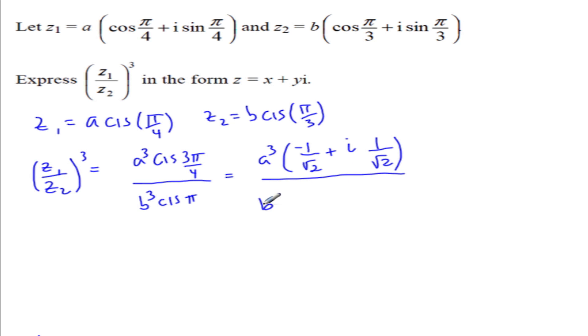So divide B cubed, cosine of pi is negative 1, plus I sine of pi, which is 0.